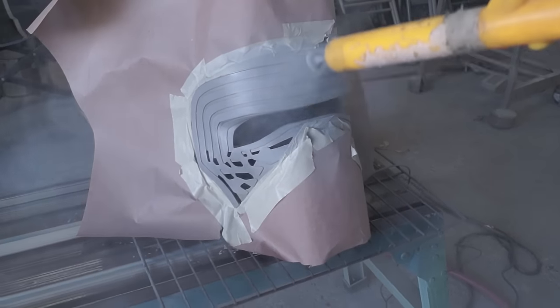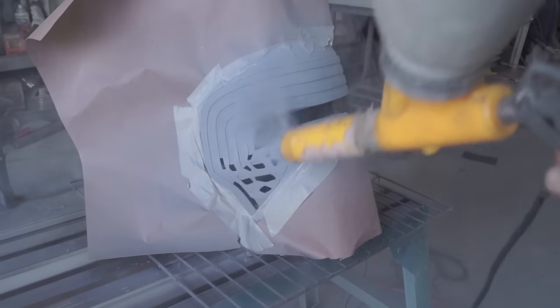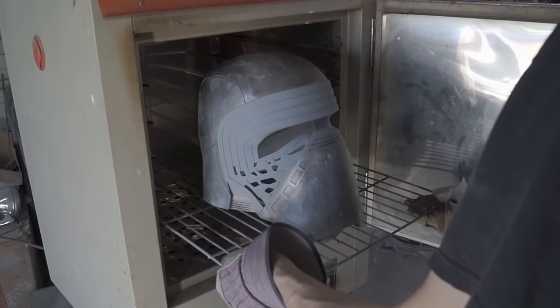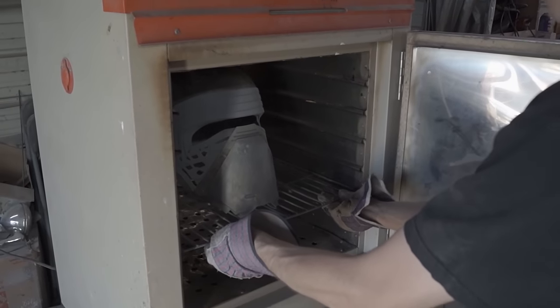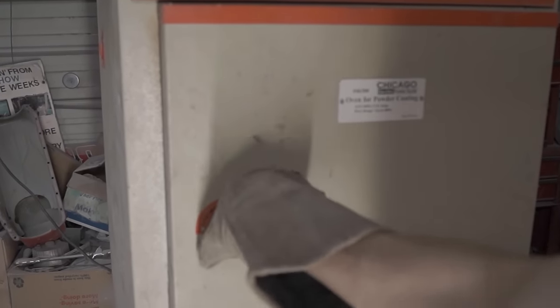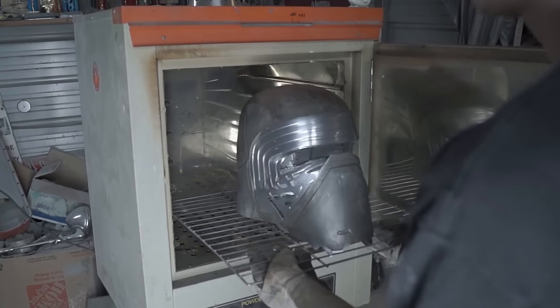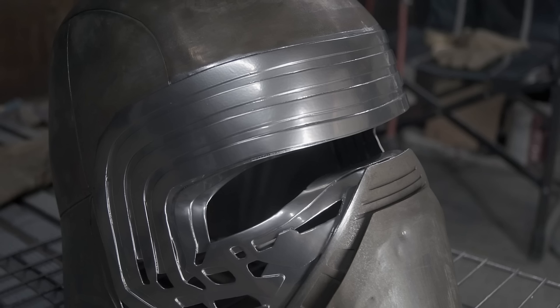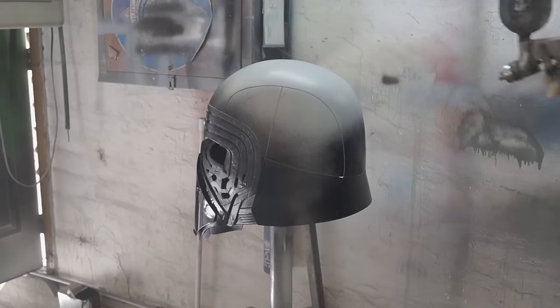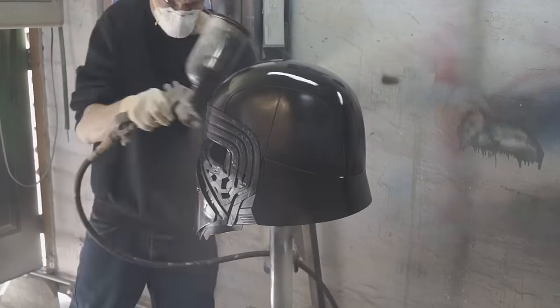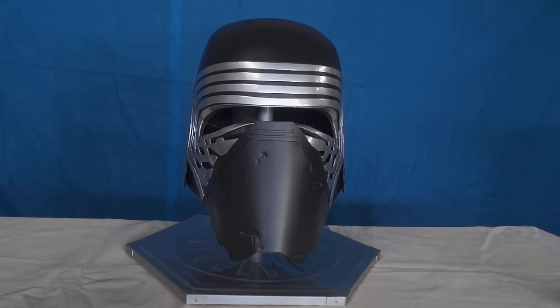For the chrome part of the mask, I used the powder coat process. Then I painted the rest of the helmet with an automotive satin black. Now the helmet is finished.